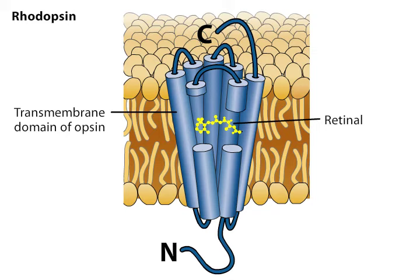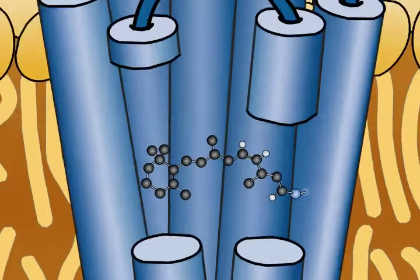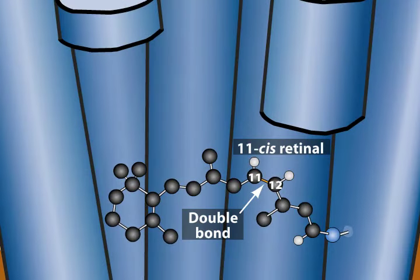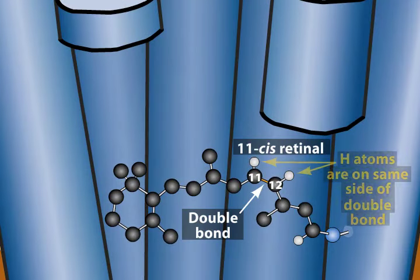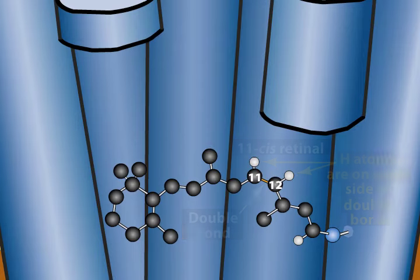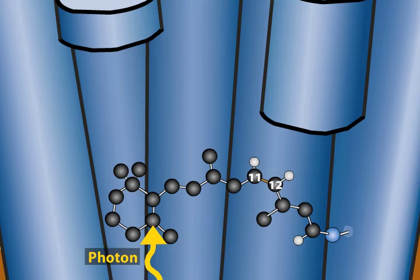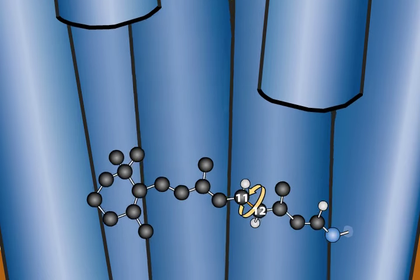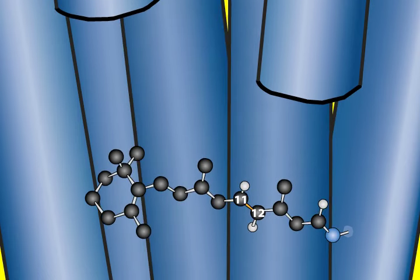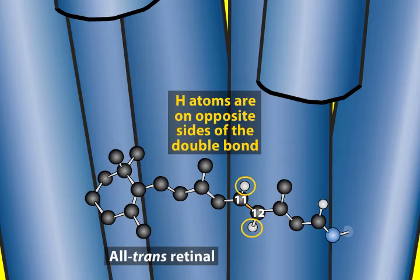Retinal is in a conformation called 11-cis, with cis referring to two hydrogen atoms being on the same side of an important double bond. When retinal absorbs a photon of light, a component of this double bond breaks, allowing free rotation about the bond. This change in retinal to an all-trans form triggers a series of alterations in the opsin component of the molecule.